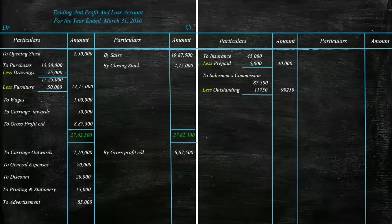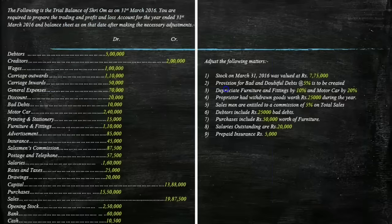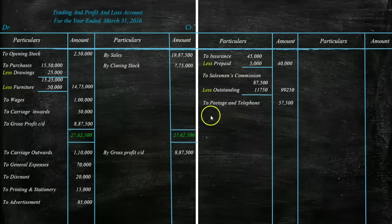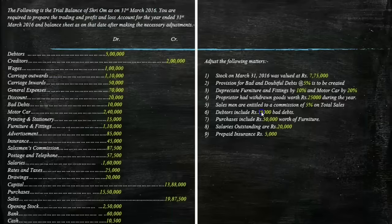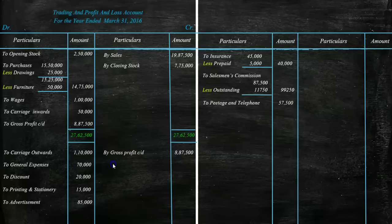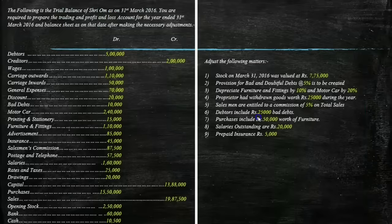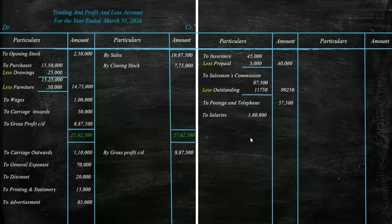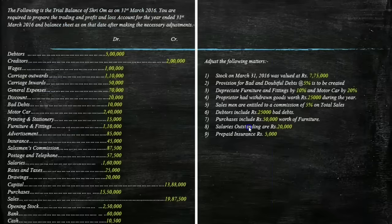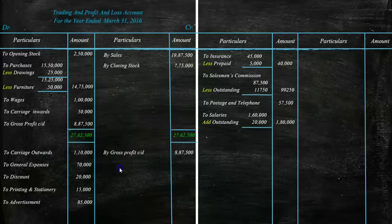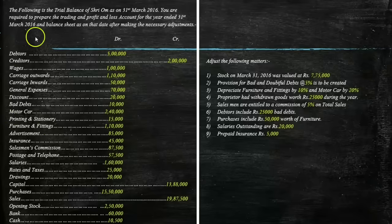Next is 'To Postage and Telephone Rs. 57,500'. Next is salaries of Rs. 1,60,000. Adjustment entry number 8 states salaries outstanding are Rs. 20,000. As outstanding amounts are always added, actual salaries become Rs. 1,80,000. Next is 'To Rates and Taxes Rs. 25,000'. All indirect expenses from the trial balance are now recorded, except bad debts.